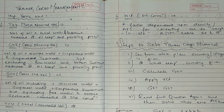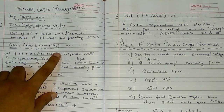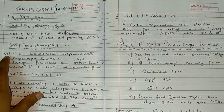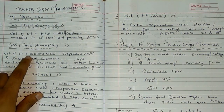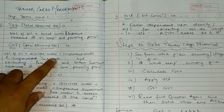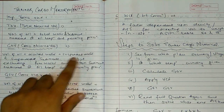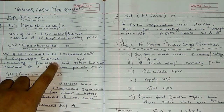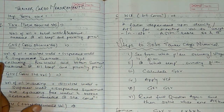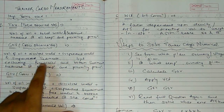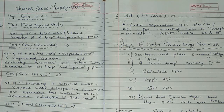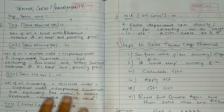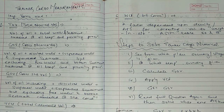GOV is Gross Observed Volume — the volume of oil plus dissolved water, plus suspended water and suspended sediment, but excluding free water and bottom sediment, measured at oil temperature and prevailing pressure.